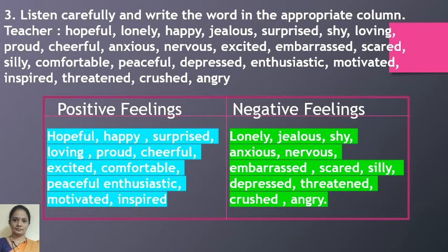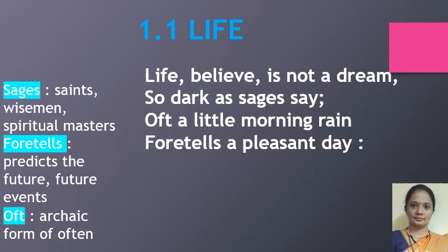Let's get started on our poem, 1.1 'Life' by Charlotte Brontë. The poem has 24 lines divided into three stanzas — the first stanza has eight lines, the second has four lines, and the third has twelve lines. In the poem, the poetess tells us we have to enjoy every moment of life. We shouldn't focus only on good or bad things; life is about balance. We should be thankful for everything life gives us and enjoy the good times while they last, since bad times don't last forever.